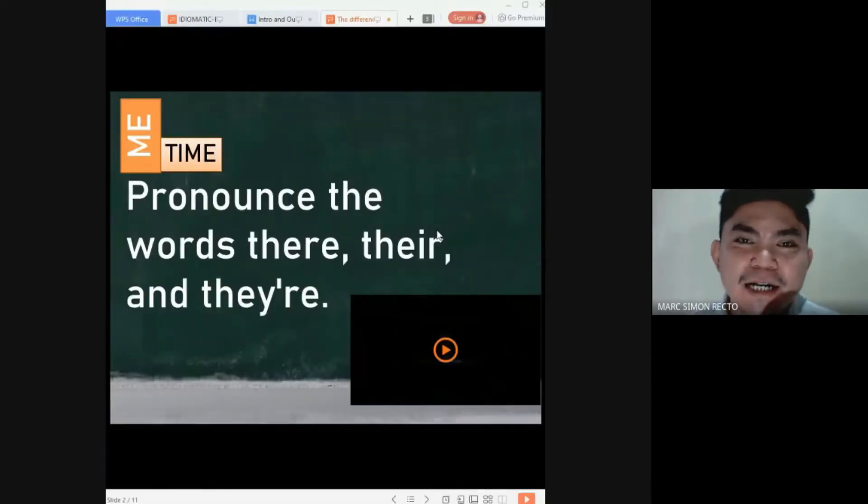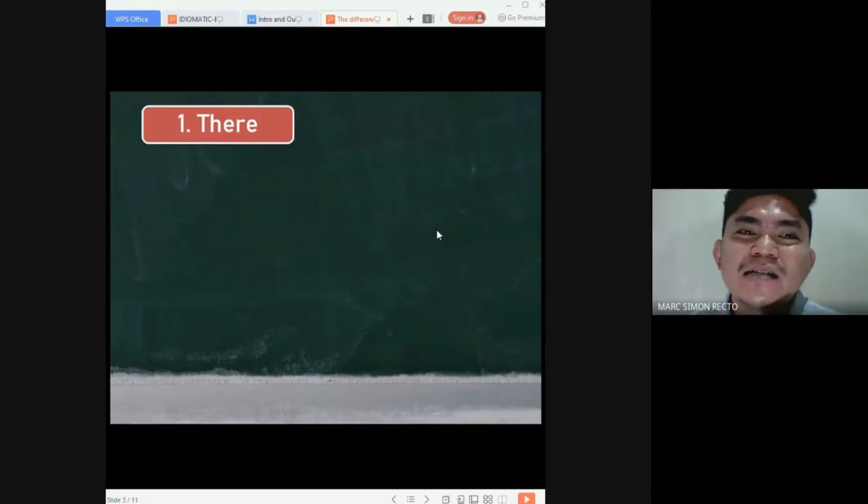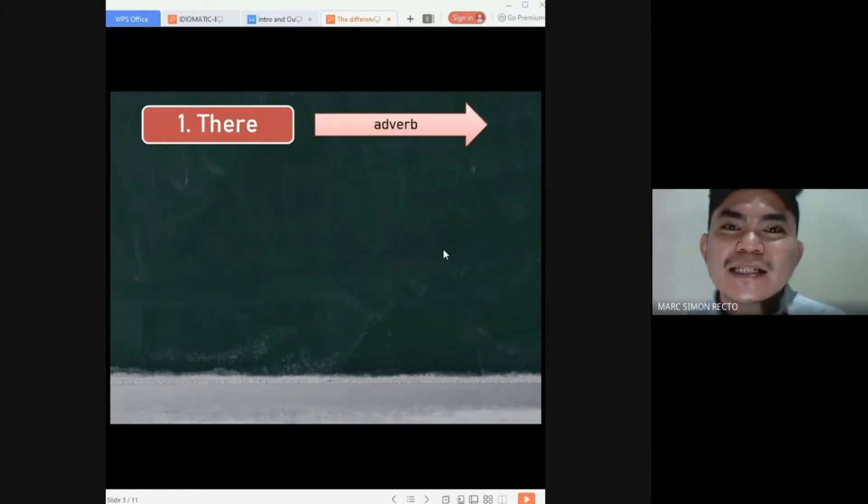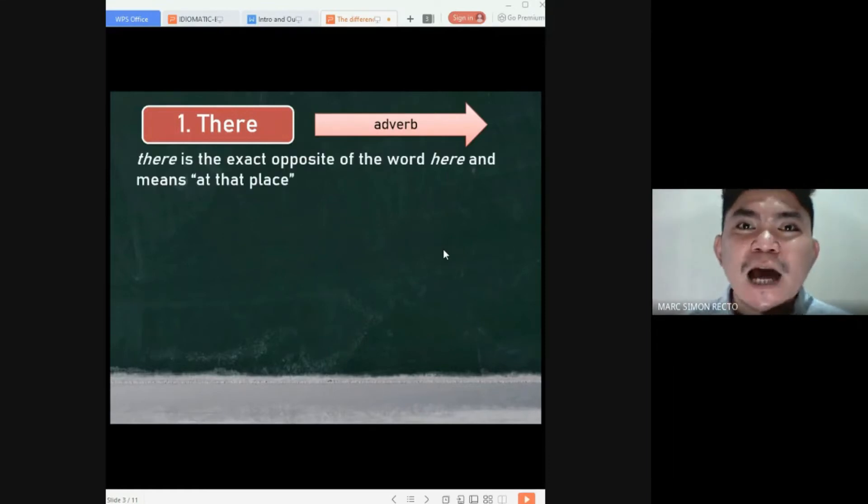Now, let's have the first word there, spelled as T-H-E-R-E. This can be used in different ways. First is as an adverb. As an adverb, it is the opposite of the word here, which literally means at that place. And for us to deeply understand this word, we will use it in a sentence.